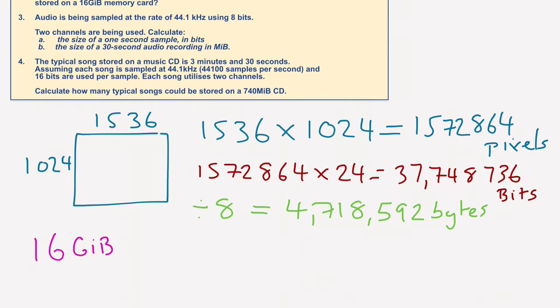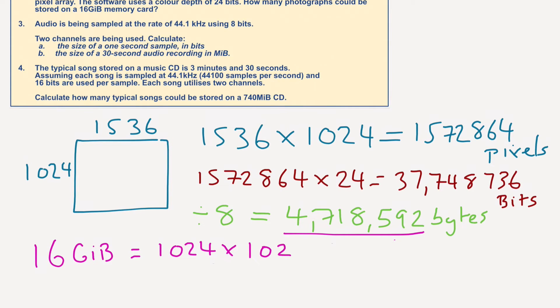16 gigabytes equals how many bytes? Well, if we go back to think about the first one, we go 1,024 multiplied by 1,024. We're going from bytes to kilobytes, then to megabytes, and then to gigabytes. We need to times it again by 1,024. And because we've got 16 of them, 1,024 multiplied by 1,024 multiplied by 1,024 multiplied by 16 equals 17,179,869,184. That's 16 gigabytes in bytes.